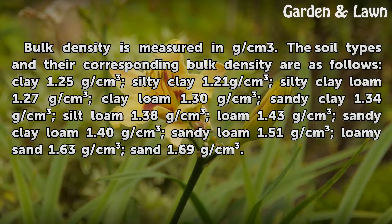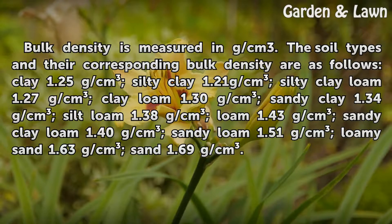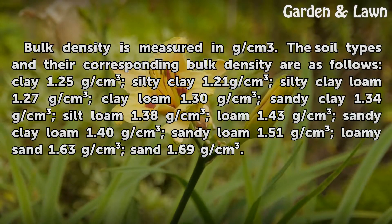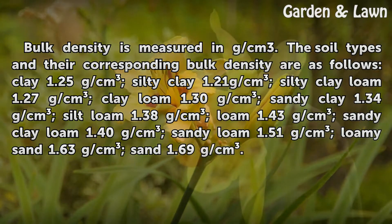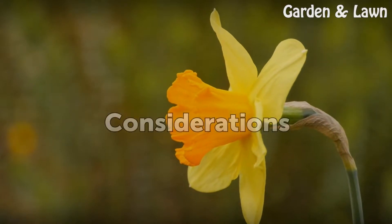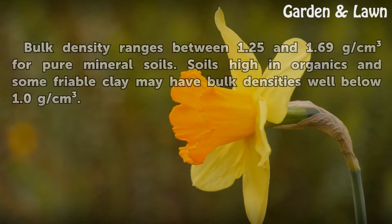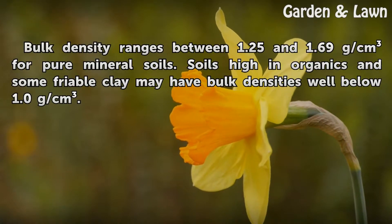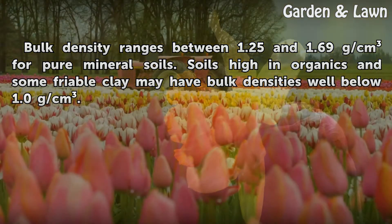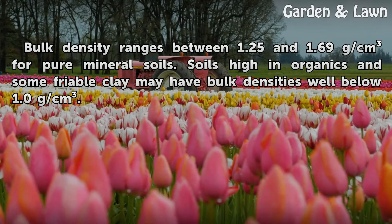Soil Types. Bulk density ranges between 1.25 and 1.69 grams per cm³ for pure mineral soils. Soils high in organics and some friable clay may have bulk densities well below 1.0 grams per cm³.